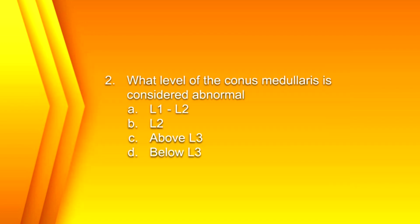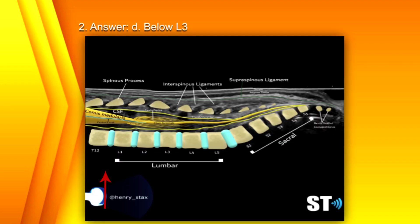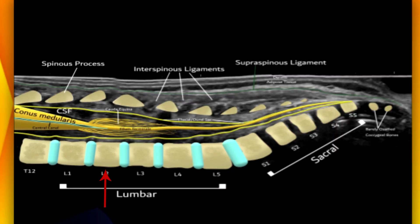Question 2. What level of the conus medullaris is considered abnormal? A. L1 to L2, B. L2, C. Above L3, or D. Below L3? The answer is D. Below L3. As you can see here, the conus medullaris usually ends at L2, with L3 and lower being considered low-lying or tethered cord.